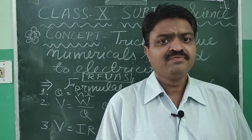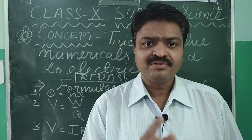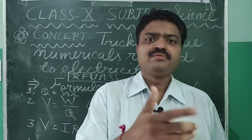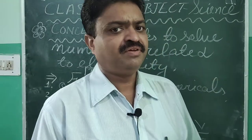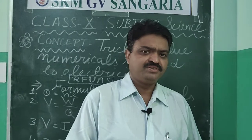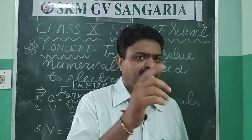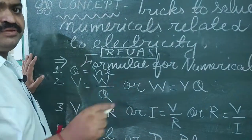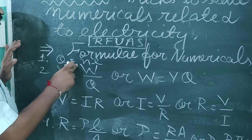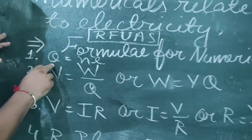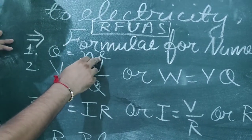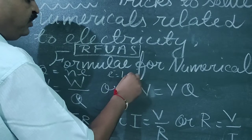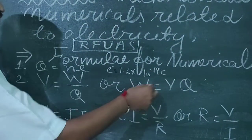To solve the numericals, you should have a particular trick, and with the help of that trick you can easily solve questions related to physics. In that trick, first you should learn all the formulas related to the particular topic. The first formula you should memorize is Q = NE, where Q means charge, N means number of electrons, and E means the charge on an electron, which is always equal to 1.6 × 10⁻¹⁹ Coulomb.